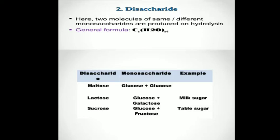The joining of these monosaccharides can be broken, and two molecules of same or different monosaccharides can be produced by the process of hydrolysis. Here are the different examples of disaccharides — for example, maltose, which is prepared with the help of two similar types of monosaccharide.